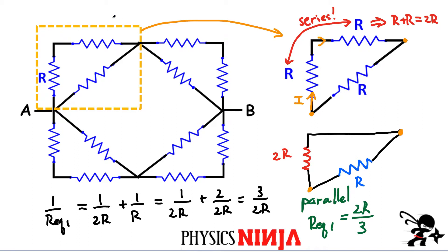Everything in this dashed box can be simply represented by 2R divided by three. We're going to use this to simplify the rest of the network — everything over here, and everything down in this lower triangle and in this other triangle, can also be replaced by this equivalent resistance of 2R over three. So let's keep this value in mind and go to the next page to further simplify this network.